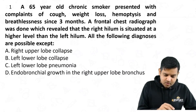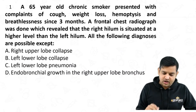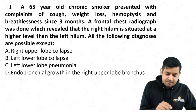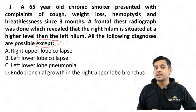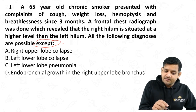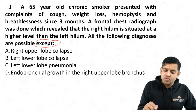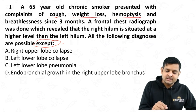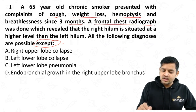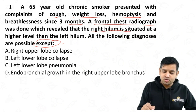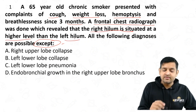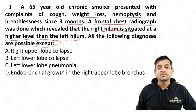Right upper lobe collapse, left lower lobe collapse, left lower lobe pneumonia, endobronchial growth in the right upper lobe bronchus — all of the following diagnoses are possible except. 'Except' is an important word here. A 65-year-old chronic smoker presented with cough, weight loss, hemoptysis, and breathlessness since three months. A frontal chest radiograph revealed that the right hilum is situated at a higher level than the left hilum.